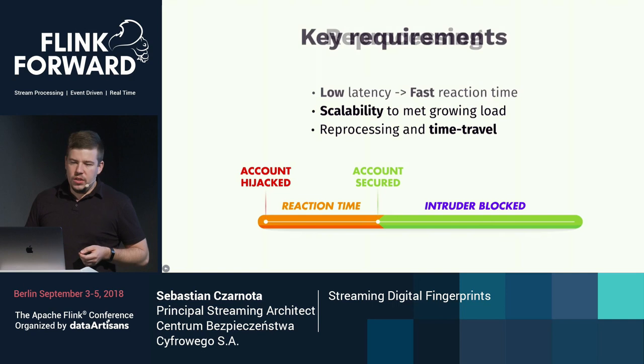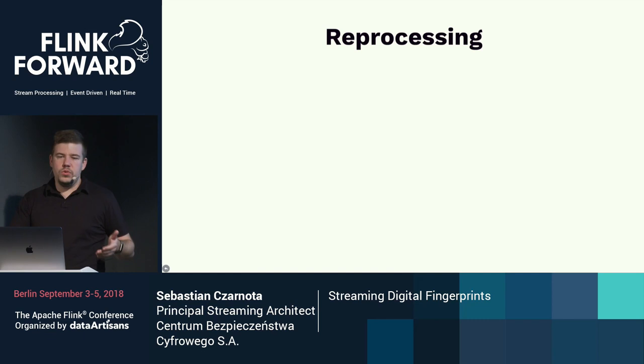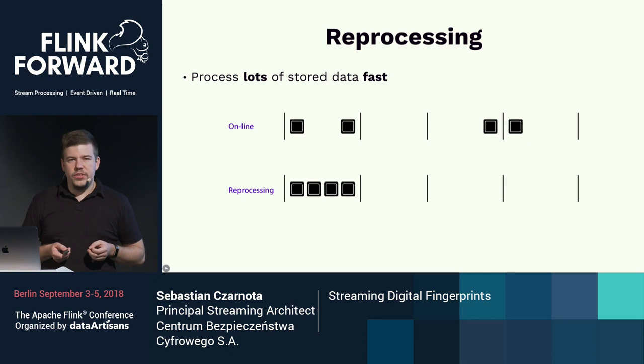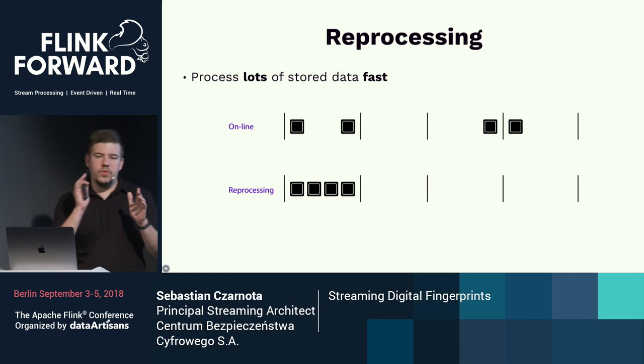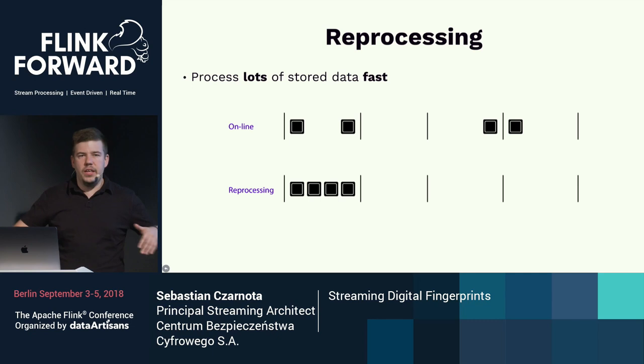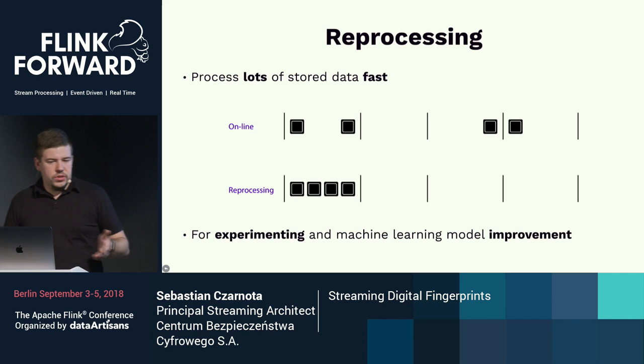What's the difference between running an application online versus doing reprocessing? When doing reprocessing, there's lots of data stored, and instead of processing data as it comes into our system, we are cramping all events together and getting them processed faster. We do this mainly for machine learning model improvements and experiments with new machine learning features.